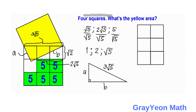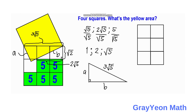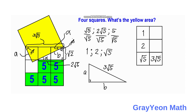We also note that this white triangle is similar to the yellow triangle. If we label one angle as alpha and another as beta, the corresponding angle in the yellow triangle is also alpha, because they come from a complementary angle relationship, and the other angle is beta.